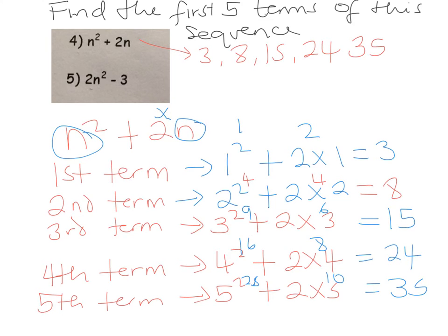1 squared is 1, 2 times 1 is 2, 2 minus 3 is minus 1. So the next one, 2 squared is 4, 4 times 2 is 8, 8 take away 3 is 5. 3 squared is 9 times 2, 18, 18 take away 3 is 15.